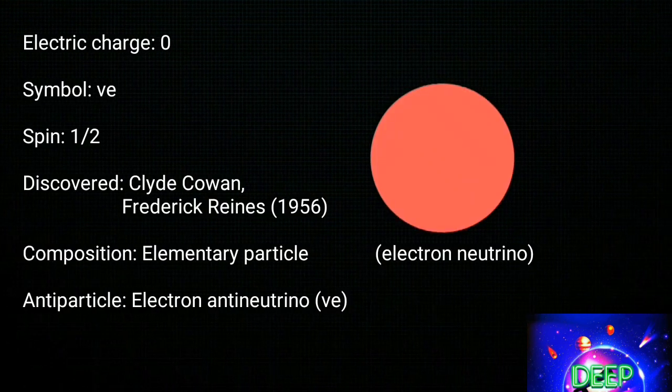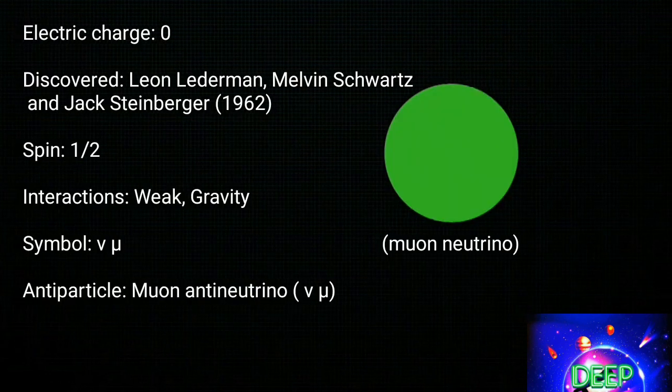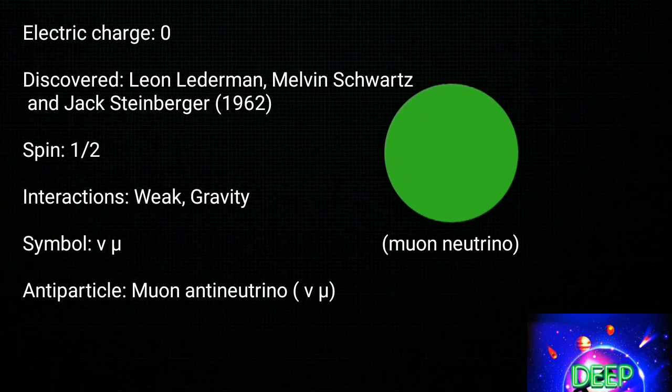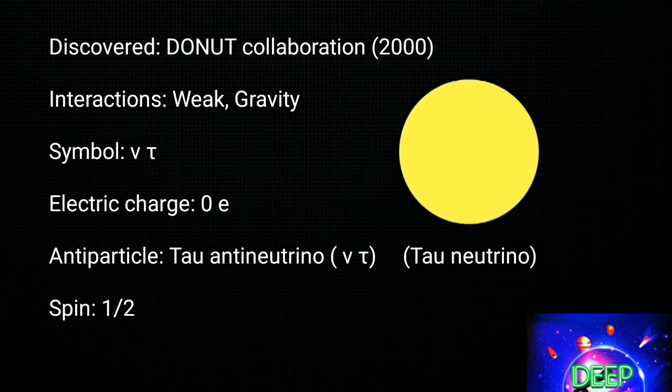With the electron and quark, it forms the electron neutrino. Together with the muon, it forms the muon neutrino. Similarly, with the tau, it forms the tau neutrino.